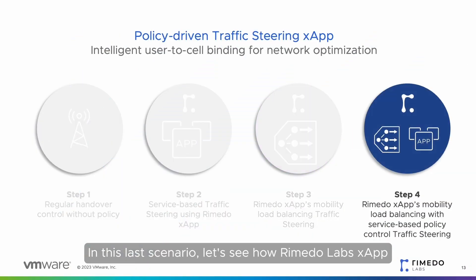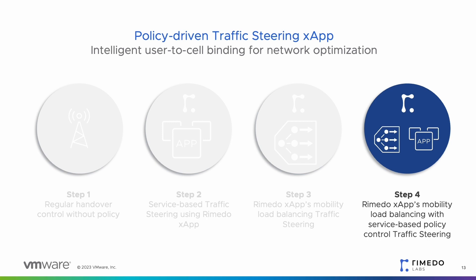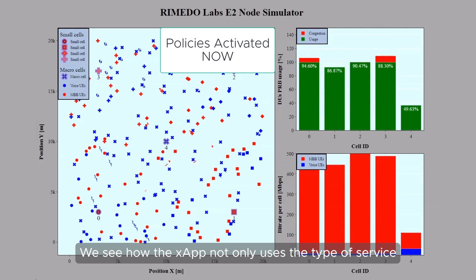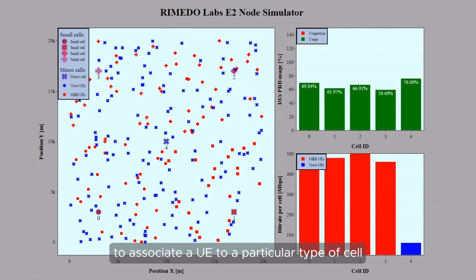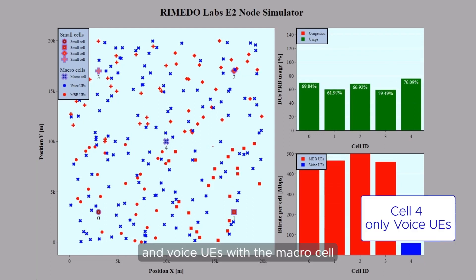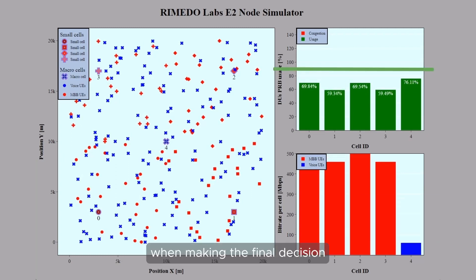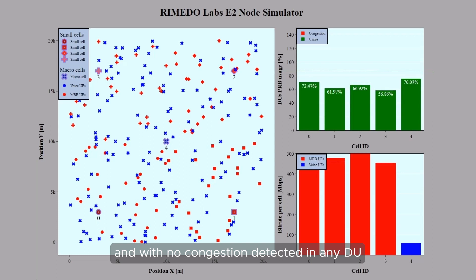In this last scenario, let's see how Remedo Labs X-App applies both mobility load balancing and service-based policy control to steer traffic. The GUI now shows the effect of applying these two policies. The X-App not only uses the type of service to associate a UE to a particular type of cell — with MBB UEs associated with small cells and voice UEs with the macro cell — but also takes each cell's load into consideration when making the final decision. As a result, UEs are associated with their preferred type of cell with no congestion detected in any DU.